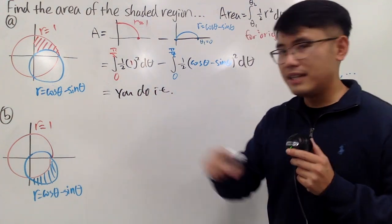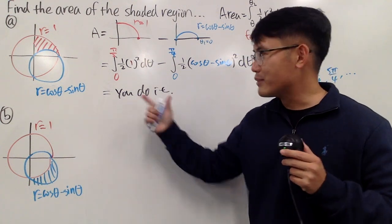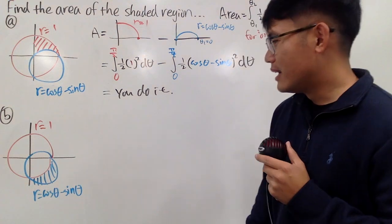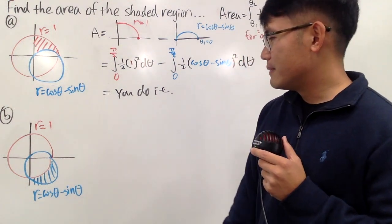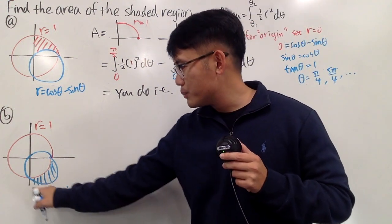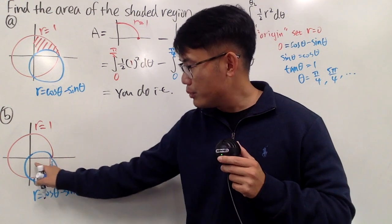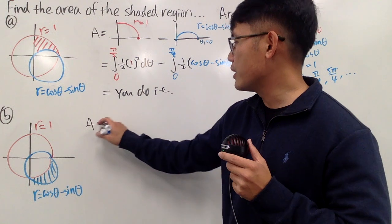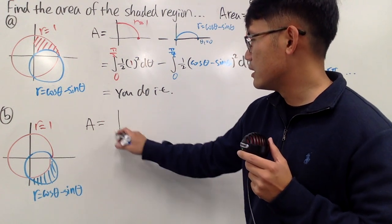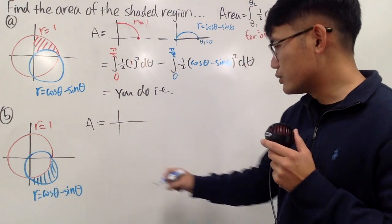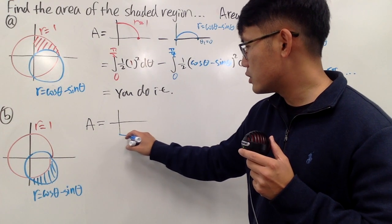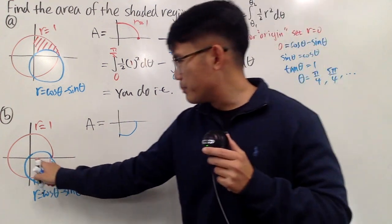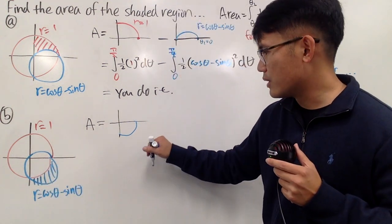Don't just write 'you do it' on a test — you have to actually compute the answer. Now let's look at the second region. For this one, it's different. We have to take the blue part and then minus the red part. The blue part is NOT a quarter circle at all, so keep that in mind. We have to integrate the blue part and subtract the red part. The red part is a quarter circle with r equals 1 centered at the origin.